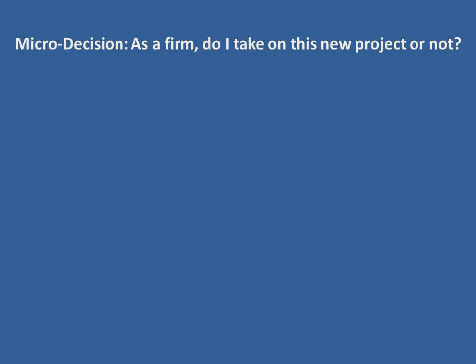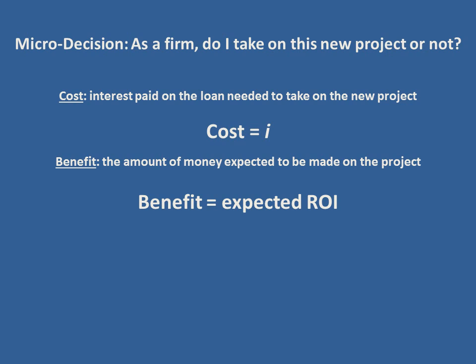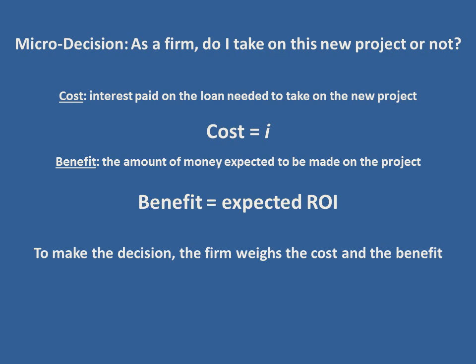We're looking at a firm that says, I need to take out a loan to do a new project, and I want to weigh my costs and my benefits to see if I should do it or not. The cost is going to be the interest paid on the loan they need to take out in order to do this new project — we'll denote that as I. The benefit is going to be the amount of money they expect to make off of this project, which we'll call the expected return on investment, or the expected ROI.